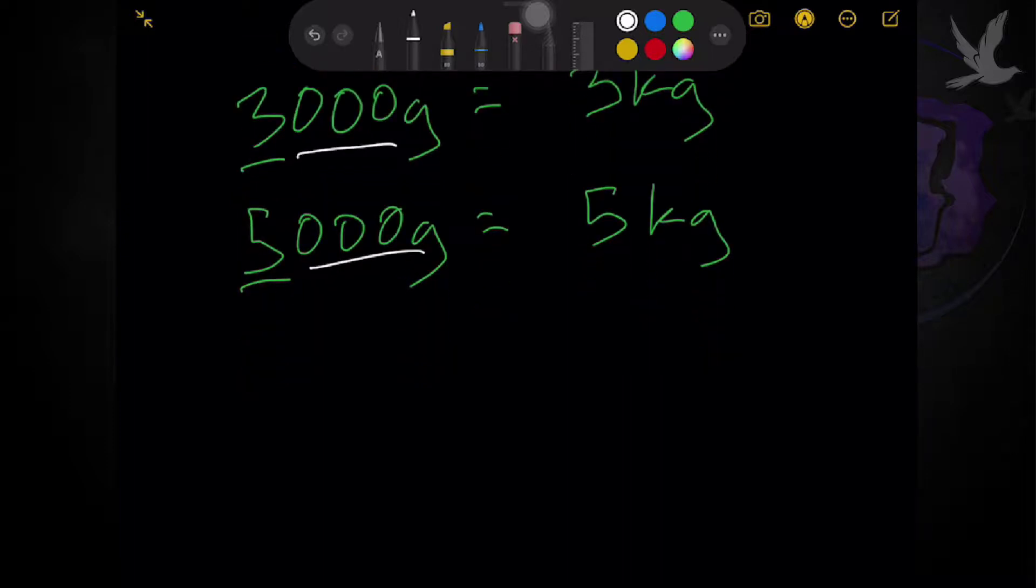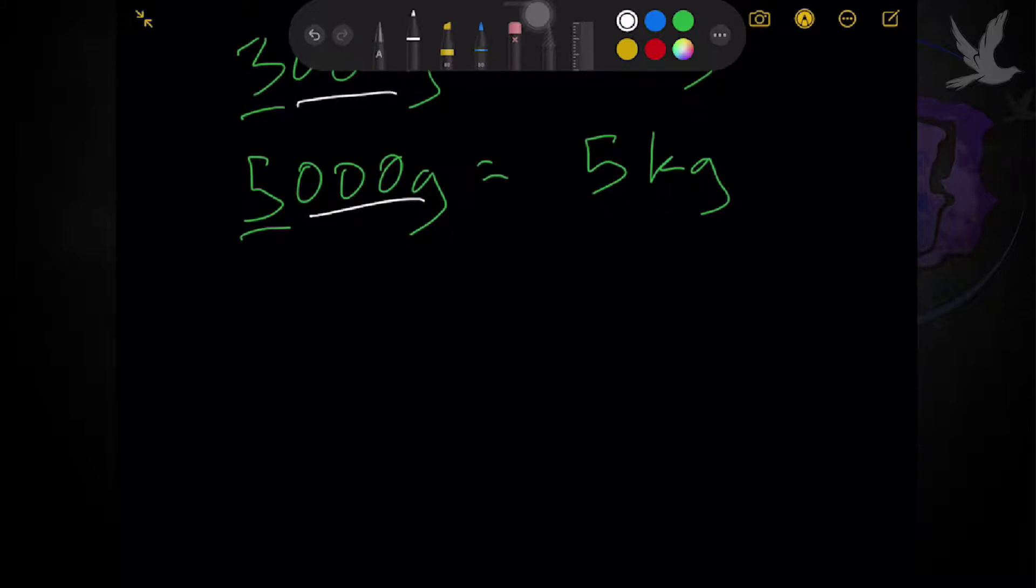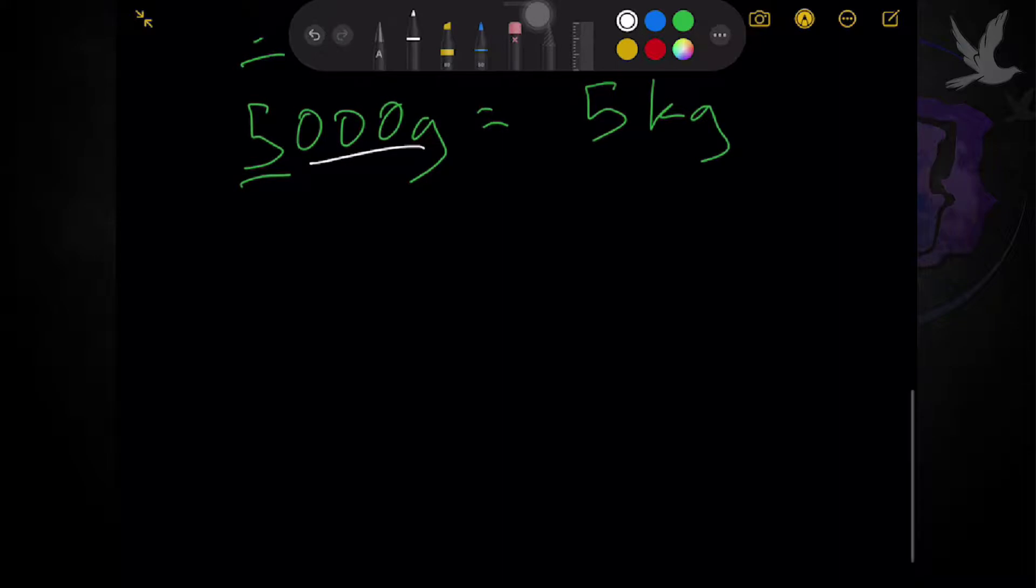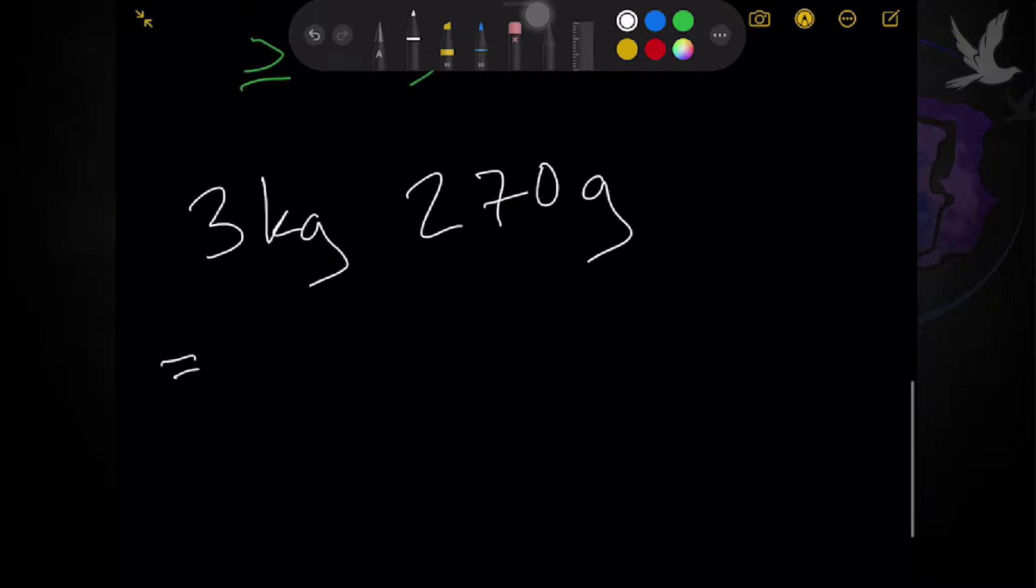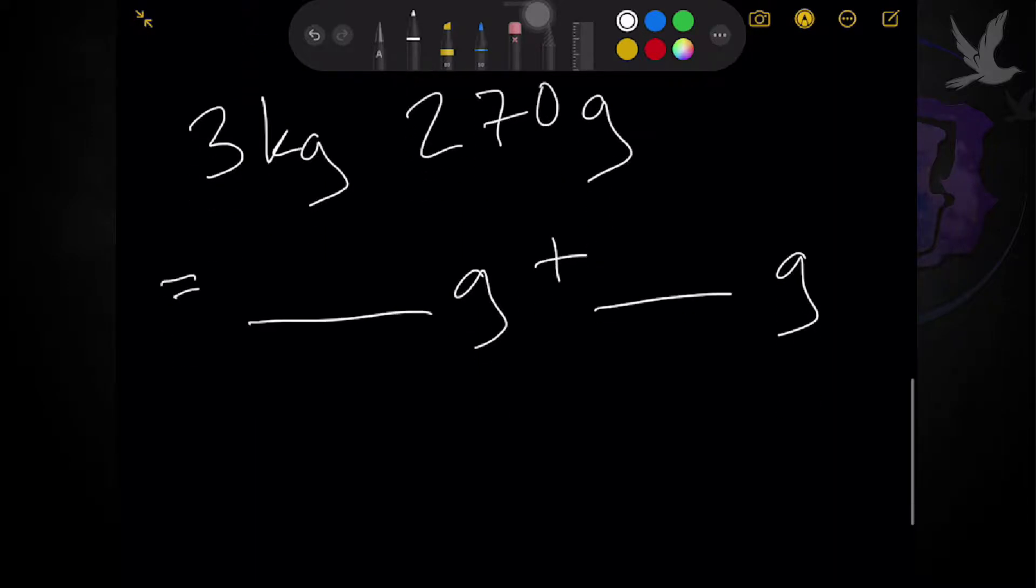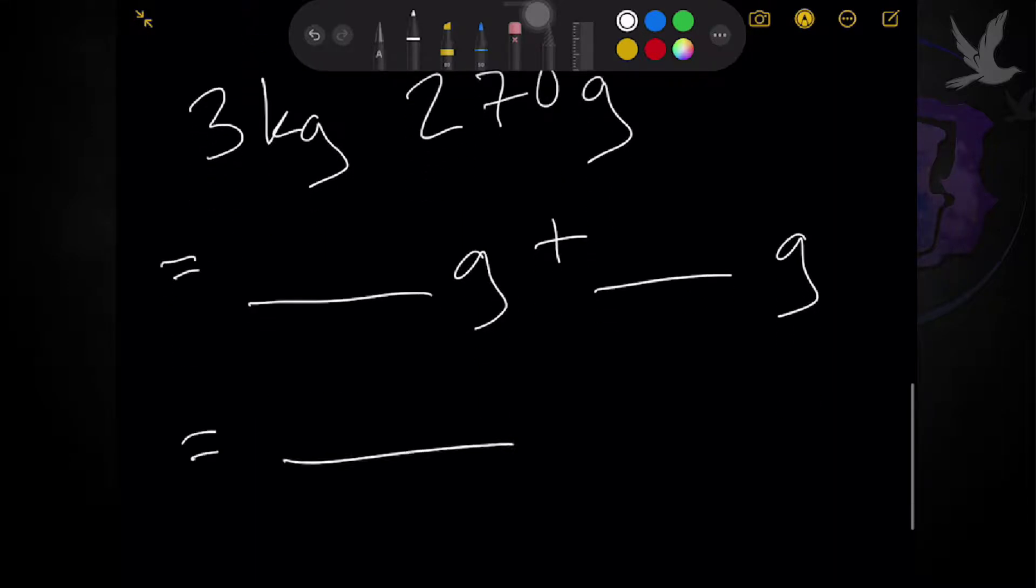Okay, regarding this part naman dito. So, kunwari lang sa book ninyo, the same lang naman yung given. Converting, let's say, we have 3 kilograms and 270 grams. Converting it first to grams, then add it to another gram. And finalizing the final unit to a total of grams lang.